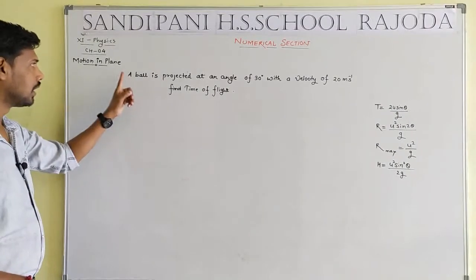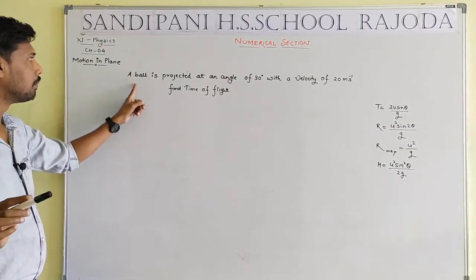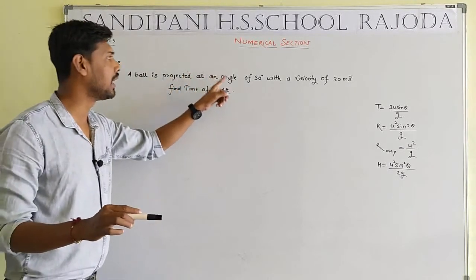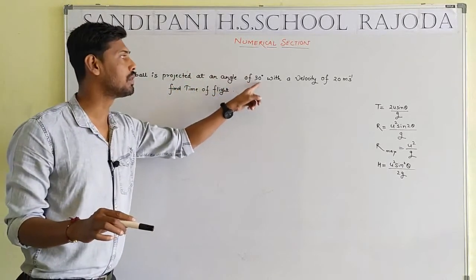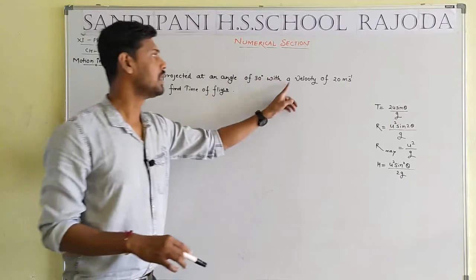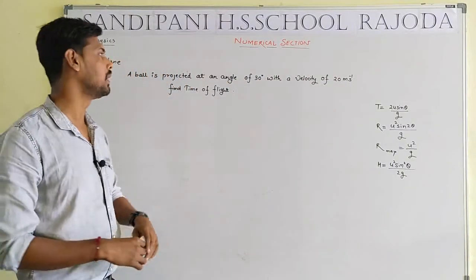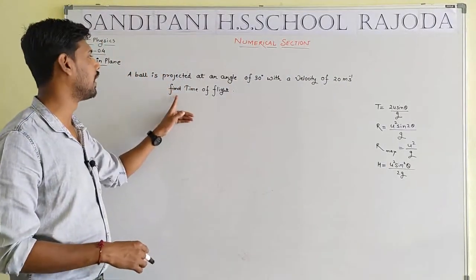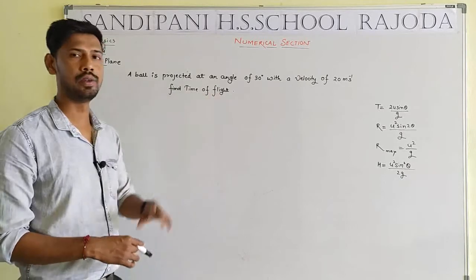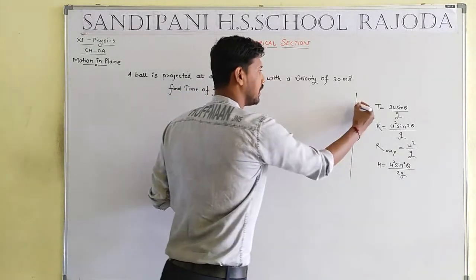First numerical: A ball is projected at an angle of 30 degrees with a velocity of 20 meters per second. Find the time of flight.